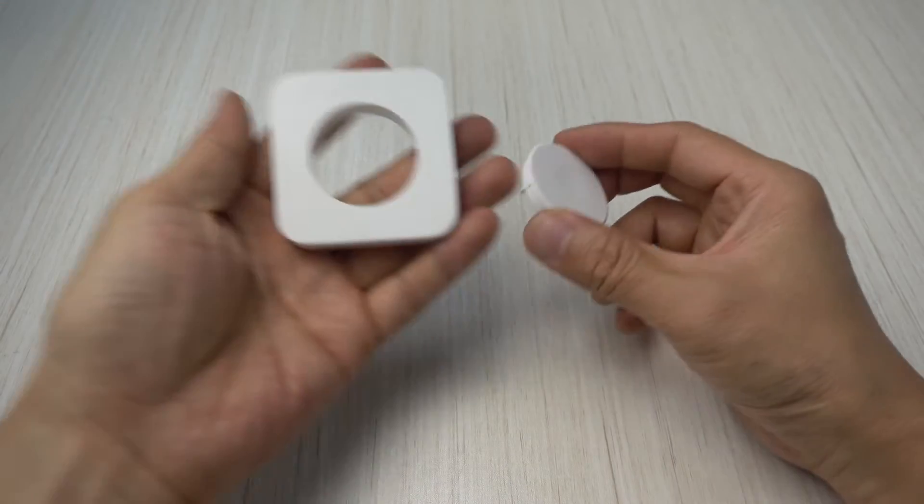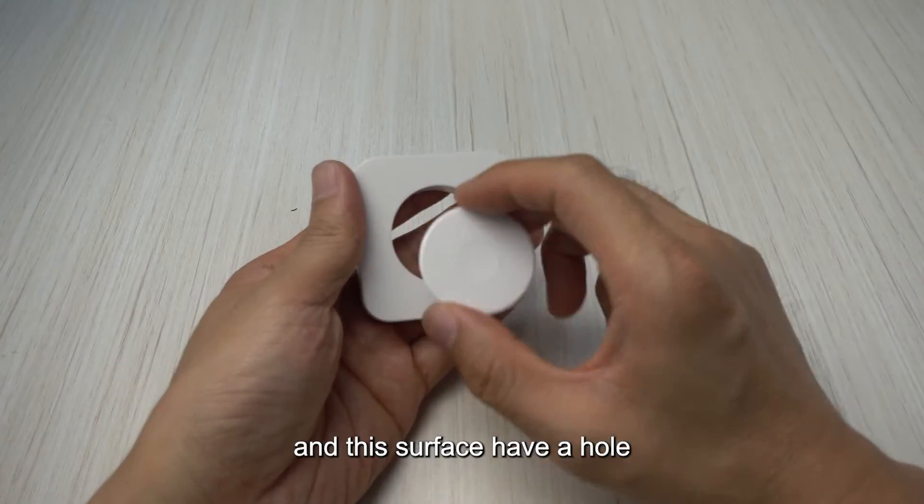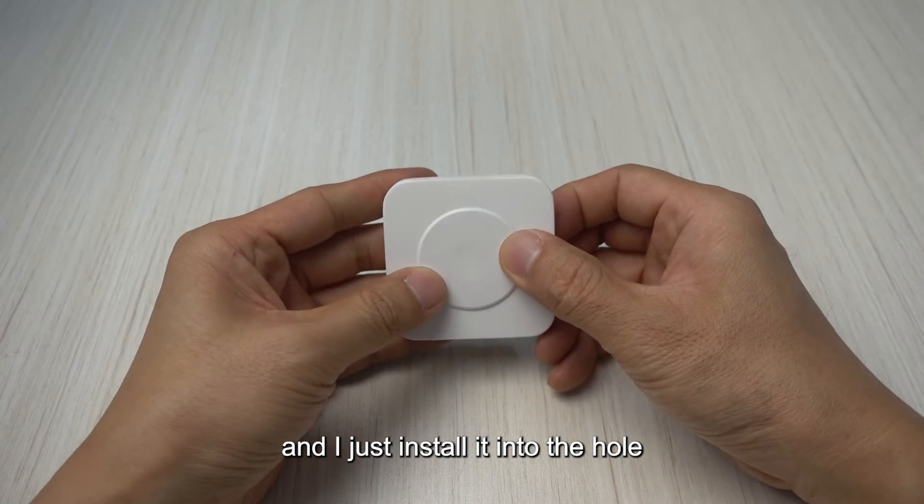So for example I want to install on a surface and this surface have a hole and I just install it into the hole.